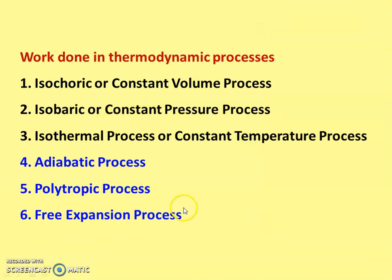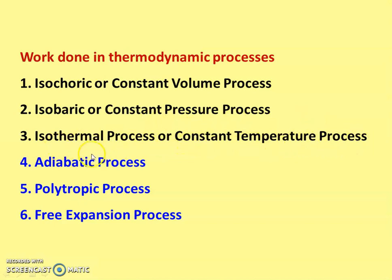We continue from the previous lecture. In the previous lecture, we derived the work done equation for the isochoric constant volume process, the isobaric constant pressure process, and the isothermal constant temperature process. Now we derive the work done for the adiabatic process and the polytropic process.